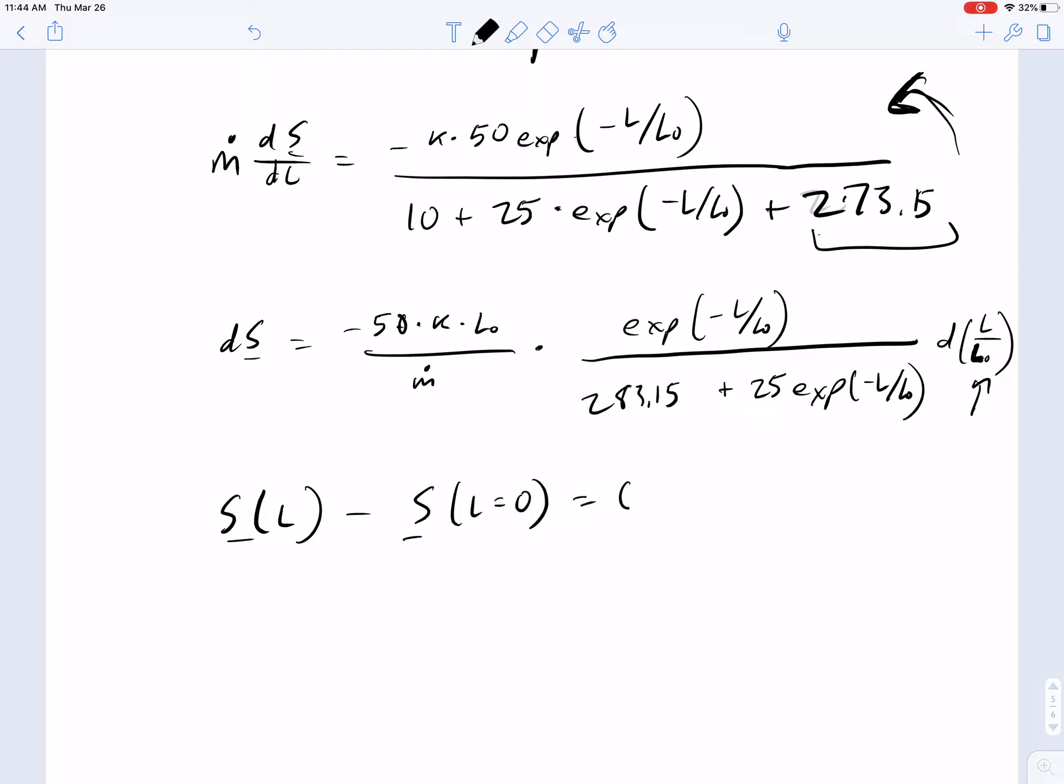The definite integral is equal to CP, the natural log of 283.15 plus 25 EXP to the minus L by L0, all divided by 308.15.